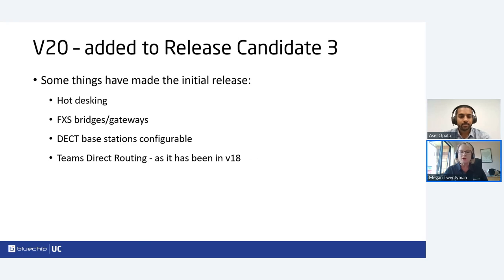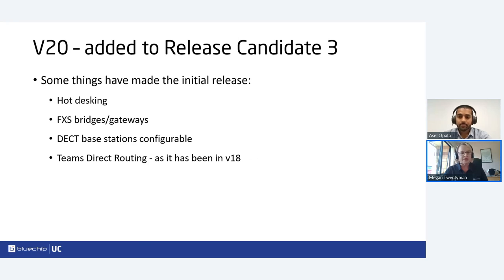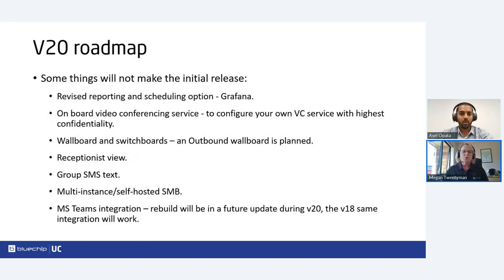Some core things that initially were not going to make the Version 20 release were added during Release Candidate 3 and have made the initial release. These include hot desking — which is a key feature for hybrid workers — FXS bridges and gateways are now supported, DECT base stations are configurable without issues, and Teams Direct Routing is there as we know it in Version 18. This is not the reworked Teams Direct Routing — that's still in the roadmap.